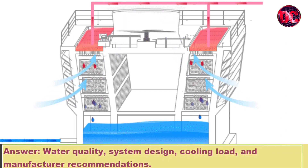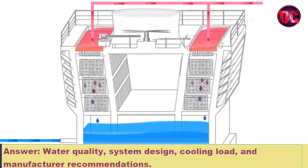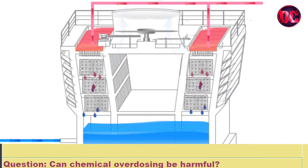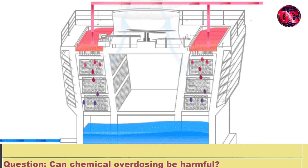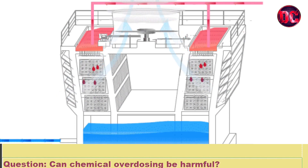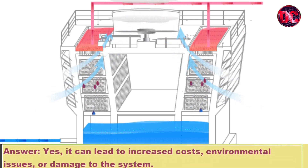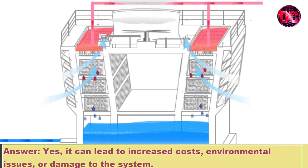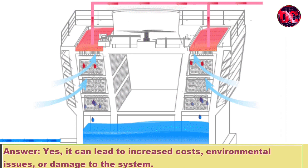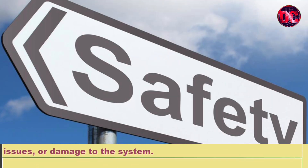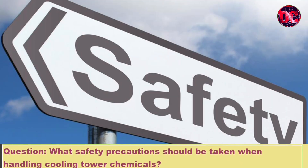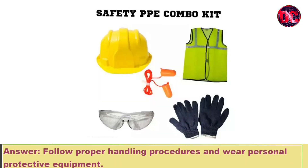Question: Can chemical overdosing be harmful? Answer: Yes, it can lead to increased costs, environmental issues, or damage to the system. Question: What safety precautions should be taken when handling cooling tower chemicals? Answer: Follow proper handling procedures and wear personal protective equipment.